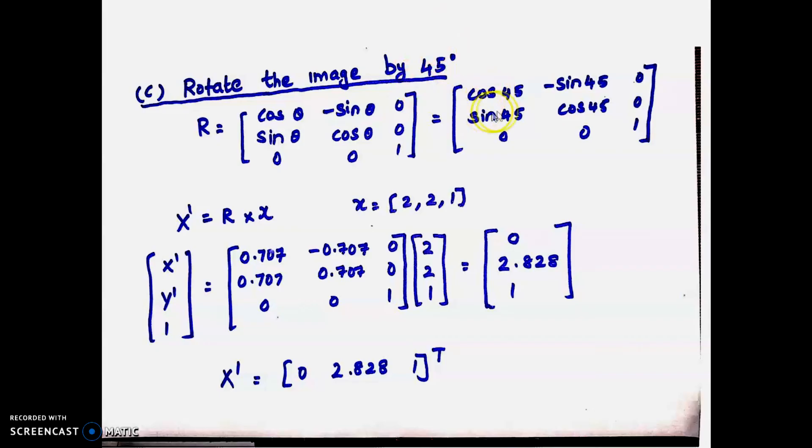cos 45° = 0.707 and sin 45° = 0.707. According to that, apply it and you will get this matrix.